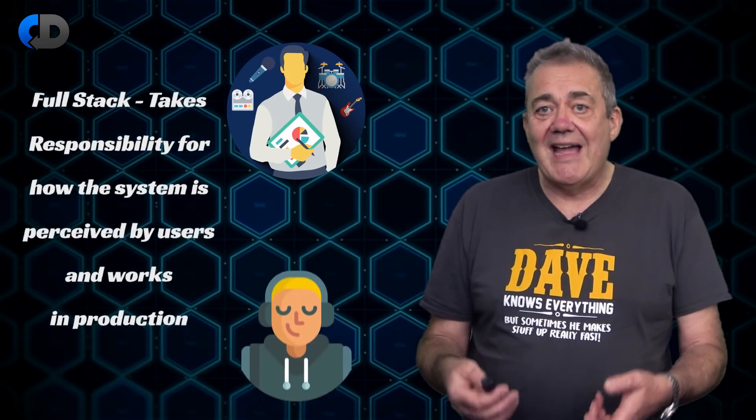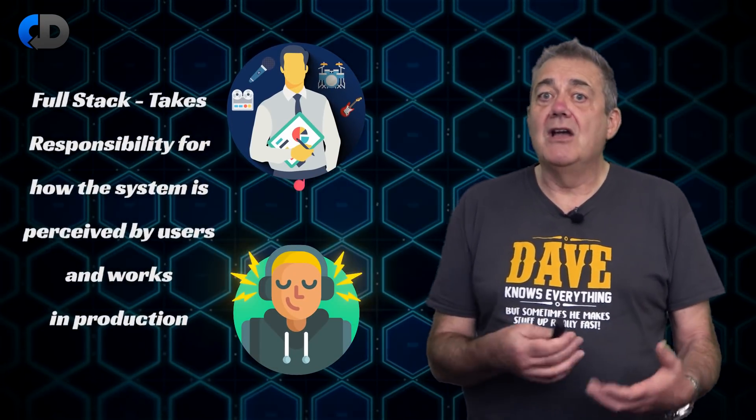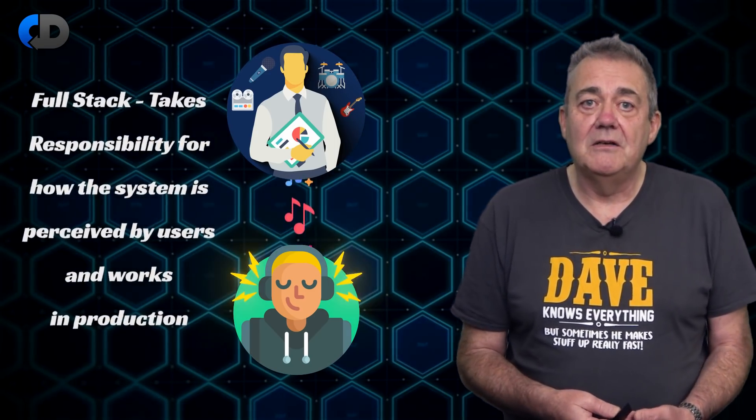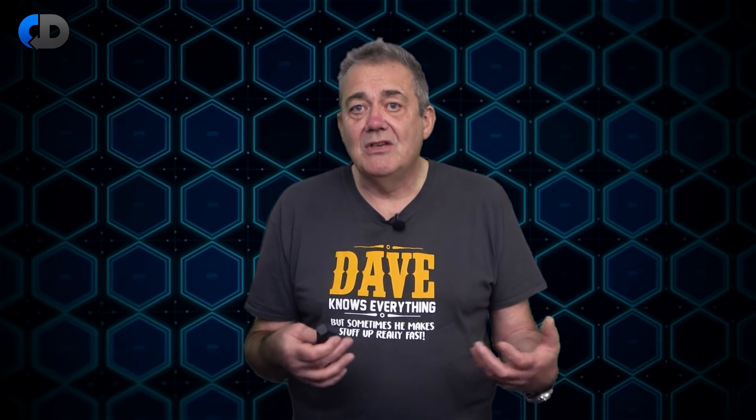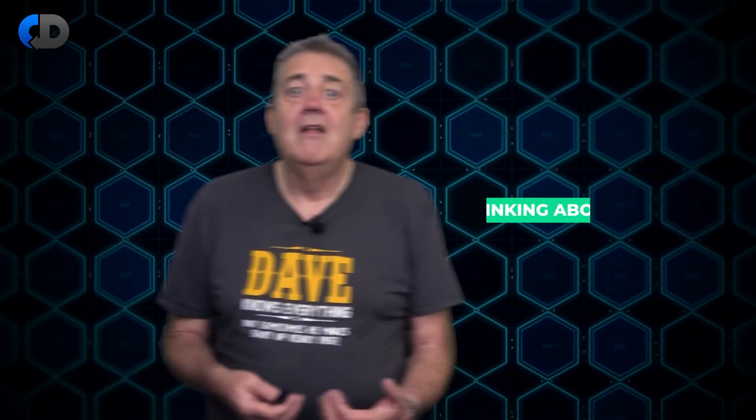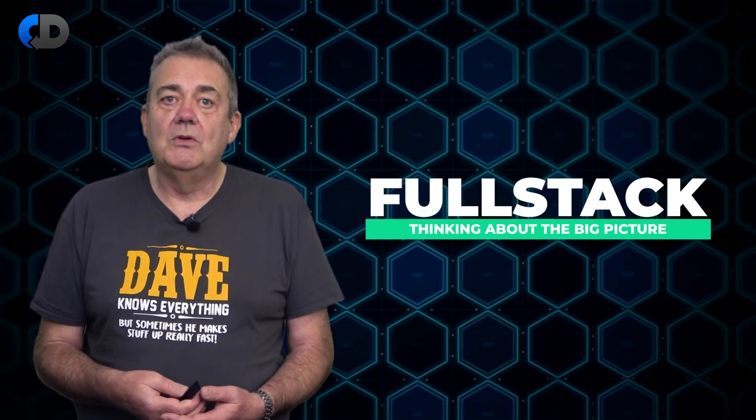The second part of my definition of full-stack is that a full-stack developer takes responsibility for how their system is perceived and works in production. It's not enough to only write back-end code or only front-end code, and it's not enough to only write both. Full-stack has little meaning unless we are using our knowledge of all the parts of our system and the context in which it operates to think about our system holistically. If I can make a decision on whether to implement a new feature in the UI, server-side, or as a clever database design, and still keep my system running and performing — that's full-stack to me.